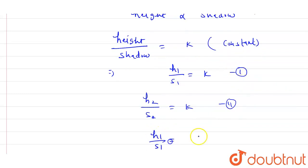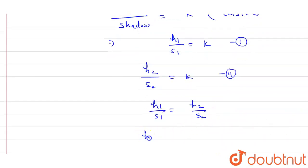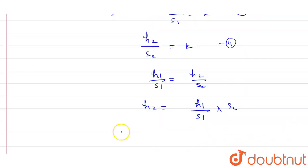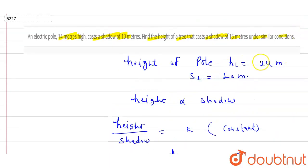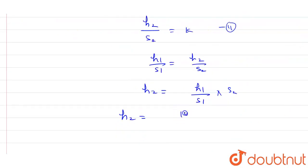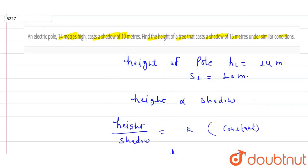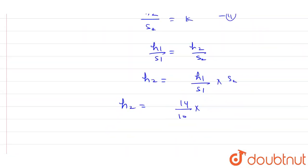So H2 equals H1 upon S1 times S2. Substituting the values: H2 equals 14 upon 10 times 15, which gives us 21 meters. So this is your answer, thank you.